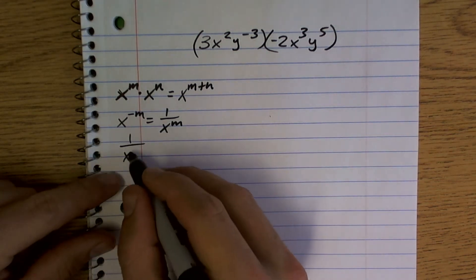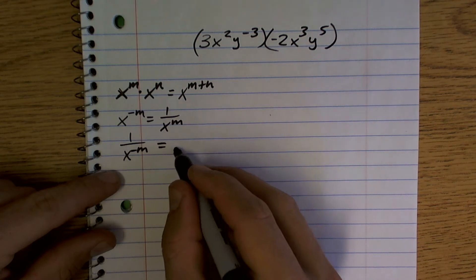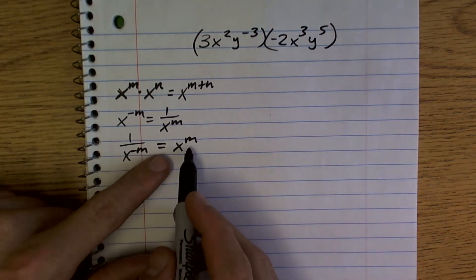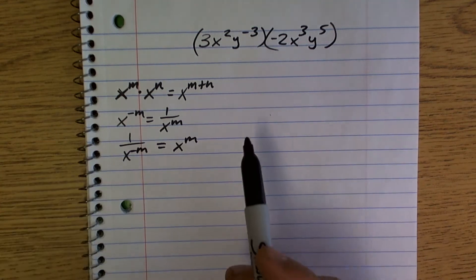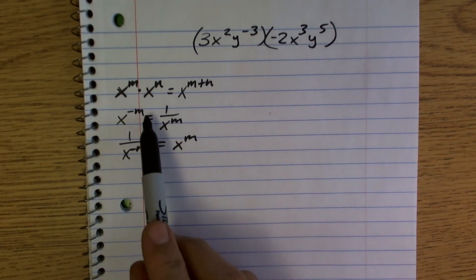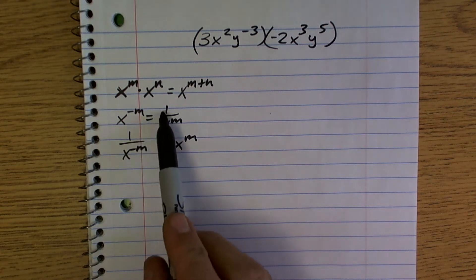And the same thing works if you have 1 over x to the negative m, that equals x to the m. So if it's negative on the bottom, we've got to put it up top. So when we're dealing with our final answer when it says simplify, we've got to make sure that we're not going to have no negative exponents.